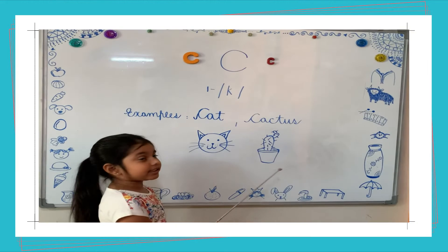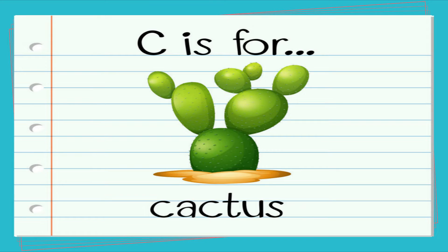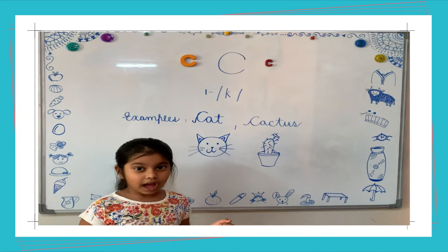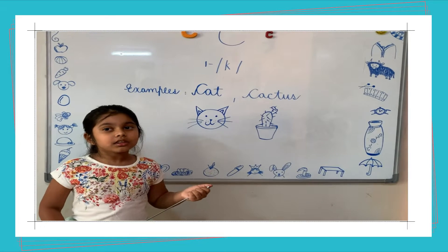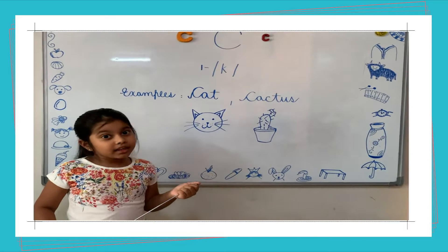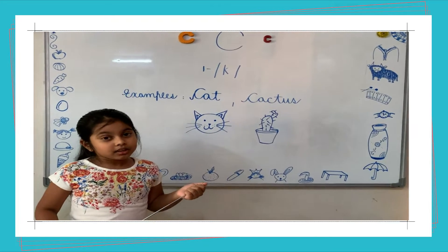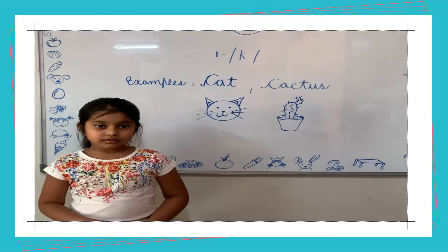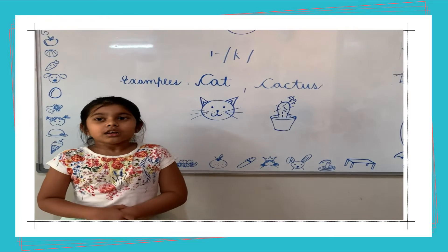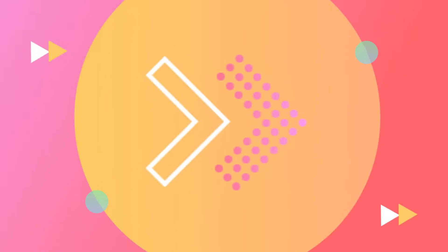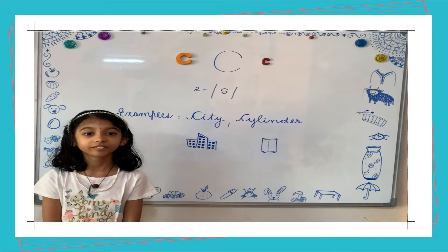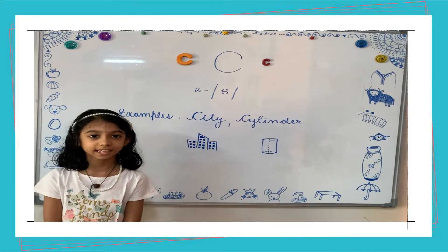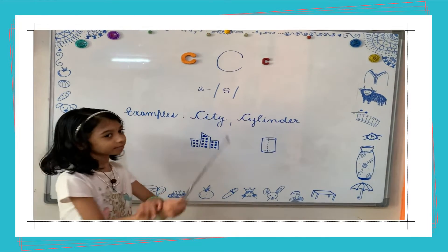Cactus: Kh-A-K-T-O-S. I repeat: Kh-A-K-T-O-S. The second phonetic sound of the alphabet C is 'S', and its symbol is...